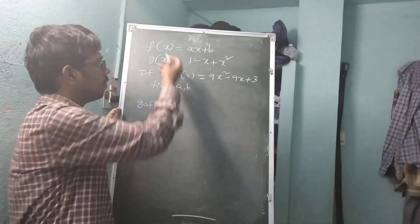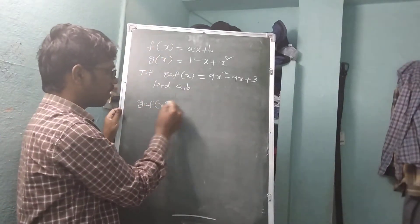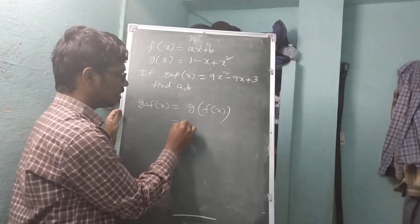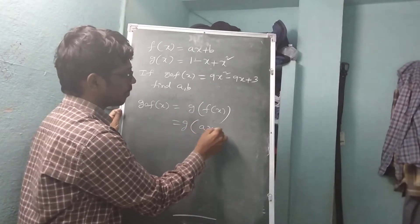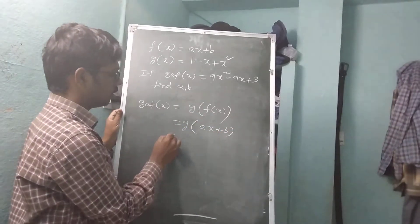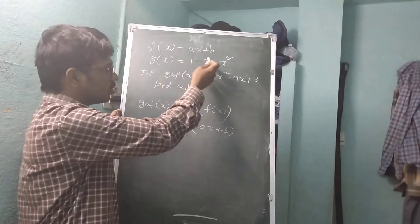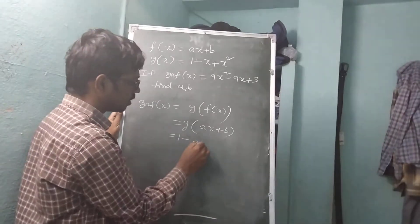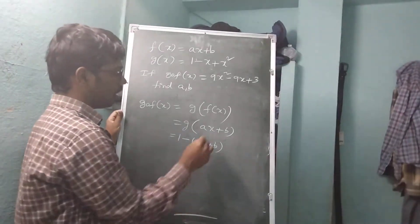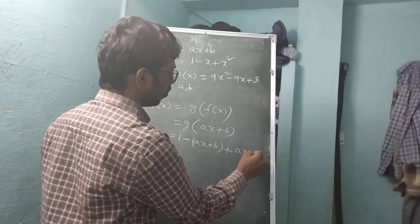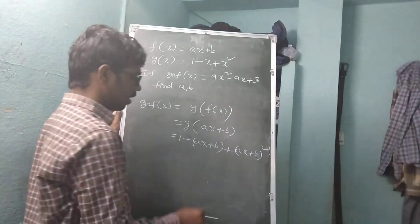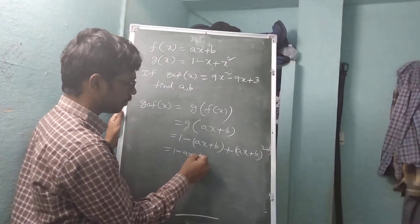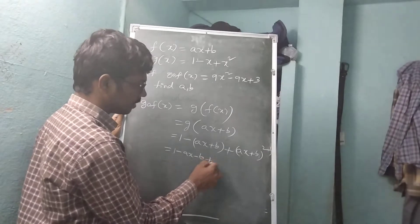I am finding it by using f of x and g of x. So g circle f equals f of x substituted into g of x. This is equal to g of ax plus b. Substituting into g: 1 minus x becomes 1 minus ax plus b, and x square becomes ax plus b whole square.